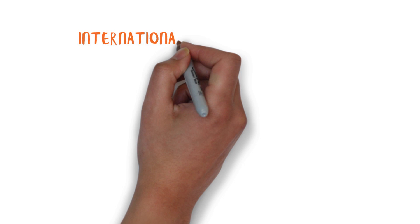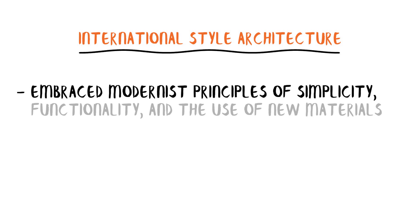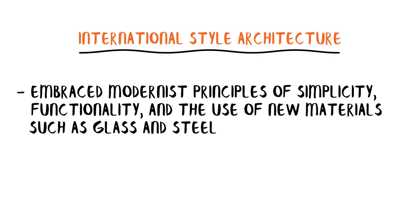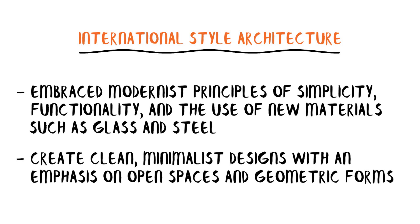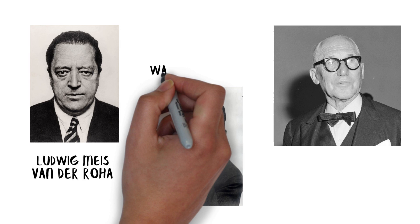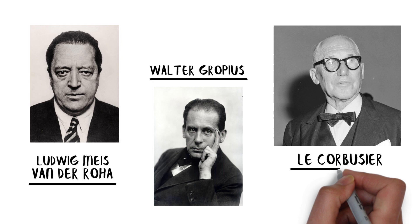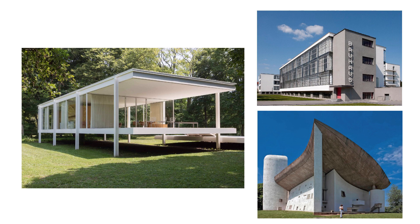International-style architecture evolved in the post-war years as a movement that embraced modernist principles of simplicity, functionality, and the use of new materials such as glass and steel. It sought to create clean, minimalist designs with an emphasis on open spaces and geometric forms. Architects such as Ludwig Mies van der Rohe, Walter Gropius, and Le Corbusier were influential in shaping the international style. Buildings characterized by flat surfaces, smooth lines, and a lack of ornamentation became iconic examples of this architectural style.